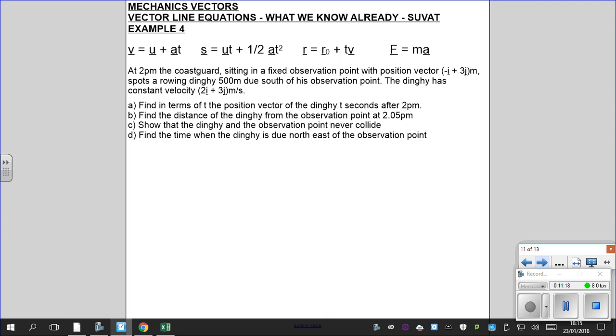I think we're running out of time, so I'm just going to move on to example 4 quickly. So at 2pm, the coast guard sitting at a fixed observation point with position vector (-1,3), right? They spot a rowing dinghy 500 metres due south of this observation point. The dinghy has constant velocity. Find in terms of the position vector of the dinghy t seconds after 2pm. So the coast guard is sitting in a position with (-1,3), so it's like there.